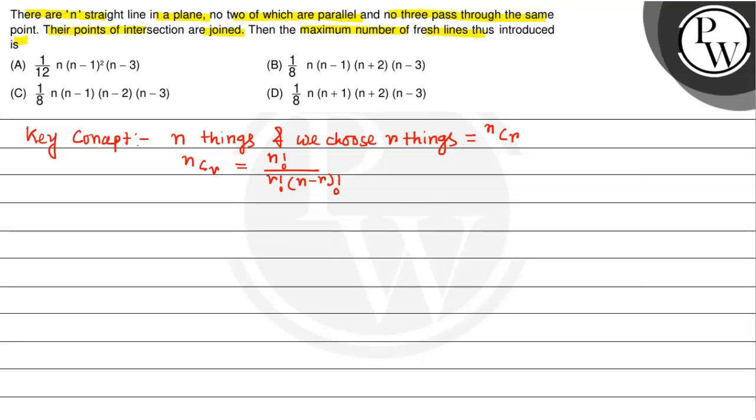Now, how to solve this problem? n straight lines in the plane, no two of which are parallel. So first of all, the number of intersection points. The number of intersection points, what is that?